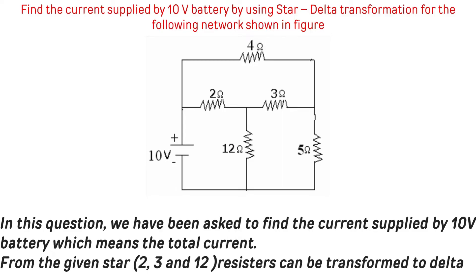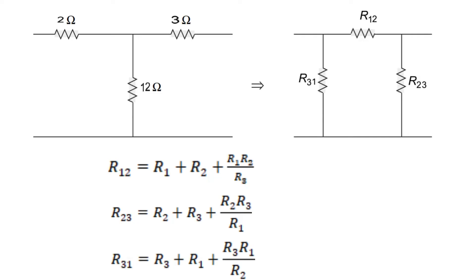From the given star network, 2 ohms, 3 ohms, and 12 ohms look like a star and can be transformed to delta. The formulas for delta resistors are: R12 equals R1 plus R2 plus R1·R2 divided by R3; R23 equals R2 plus R3 plus R2·R3 divided by R1; R31 equals R3 plus R1 plus R3·R1 divided by R2.